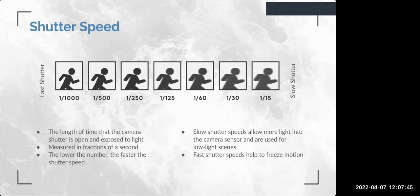Shutter speed determines the duration that the exposure takes and thereby how much light is sampled. A faster shutter speed like 1/500 (2 milliseconds) has the effect of freezing motion, while a slower shutter speed like 1/30 (33 milliseconds) may produce motion blur. If the target is moving, faster shutter speeds are necessary, but they also require more light.